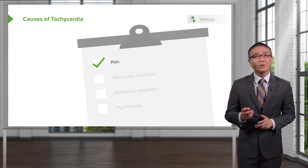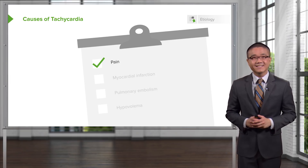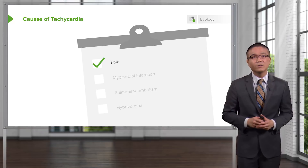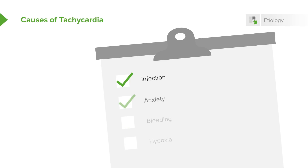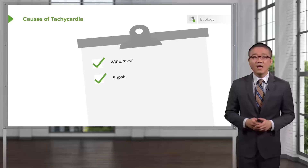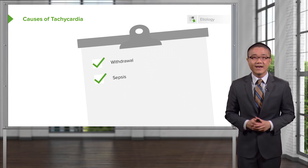Let's first visit tachycardia. When I was a resident, one of the things we were always most afraid of is being called by the nurse to the bedside and told that your patient had a sinus tachycardia. Look at this laundry list of potential differential diagnoses, all of which you have to rule out. Pain is probably one of the most common postoperative causes of tachycardia, but patients can actually be having a myocardial infarction or pulmonary embolism, hypovolemia, maybe an infection, anxiety, bleeding, hypoxia, withdrawal if the patient has a history of alcohol, or they may be developing sepsis.